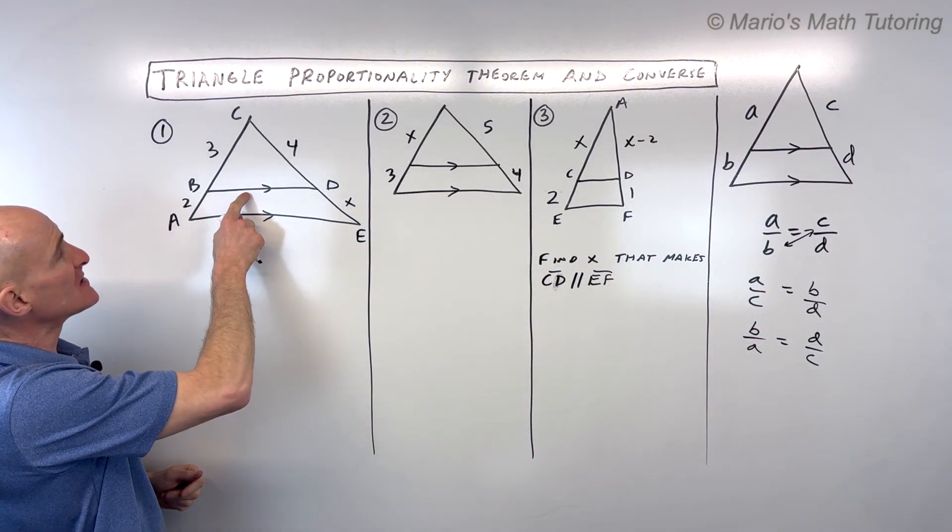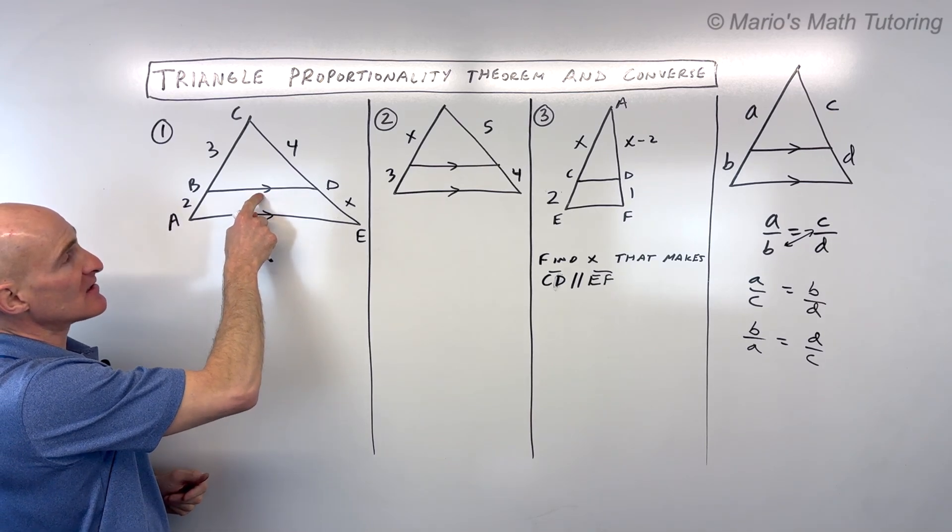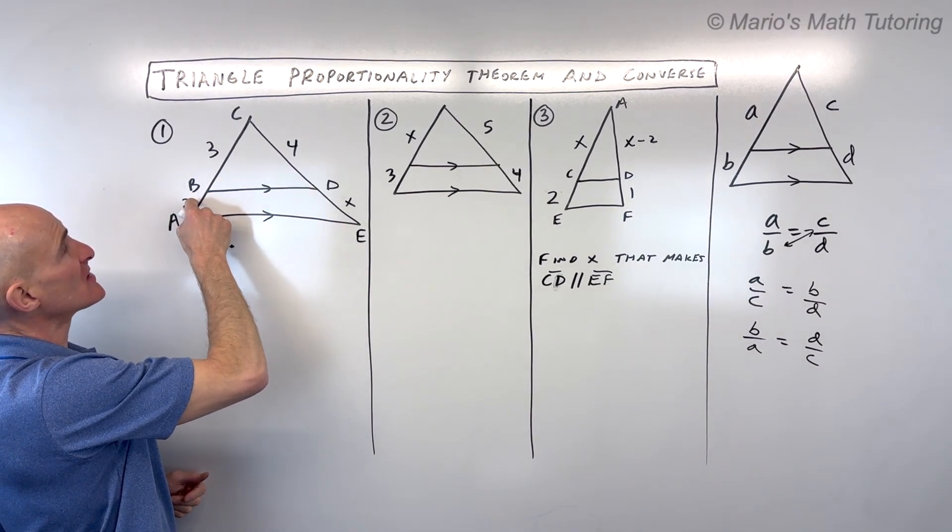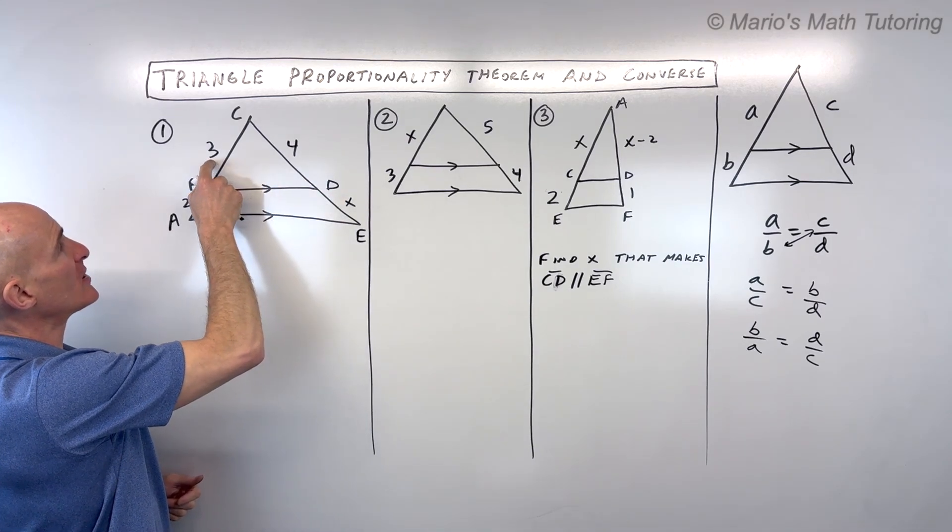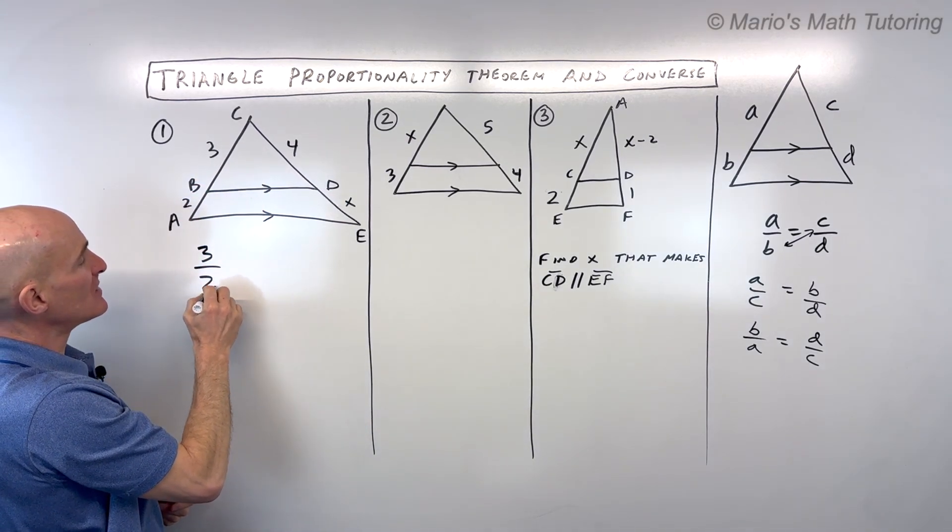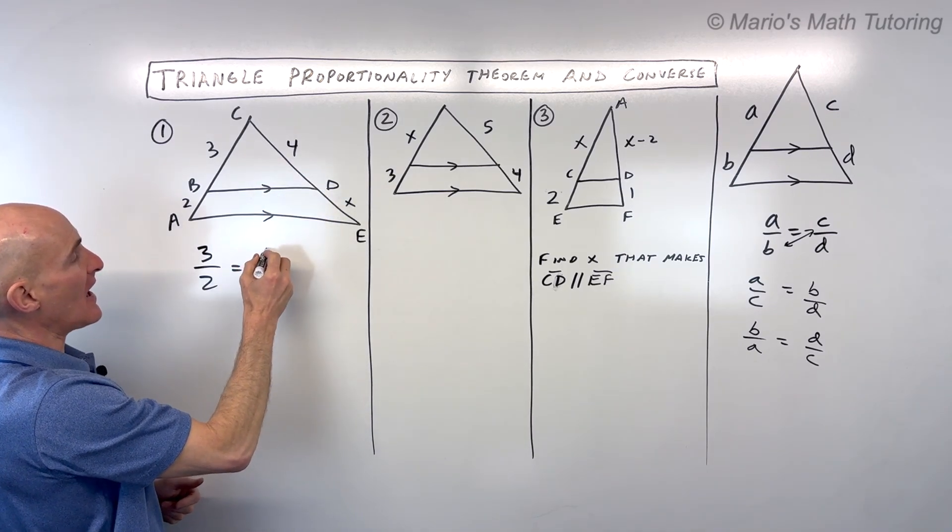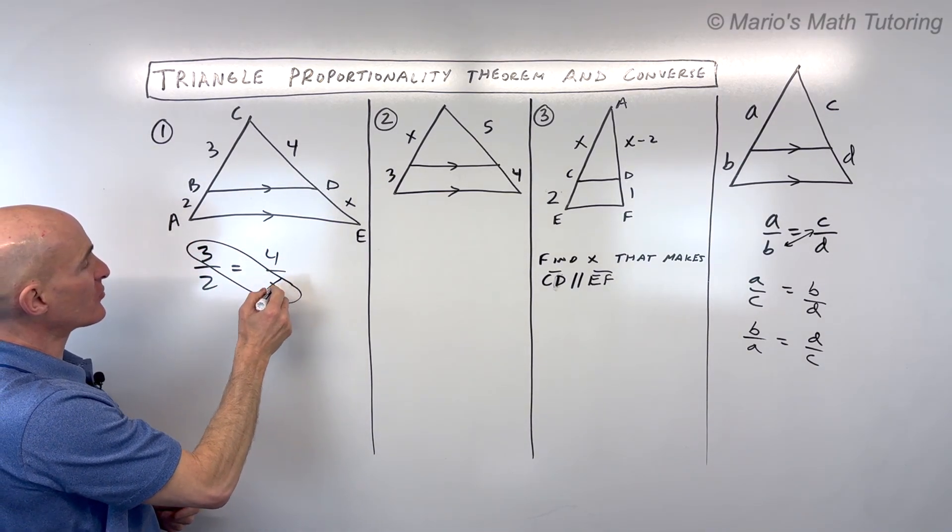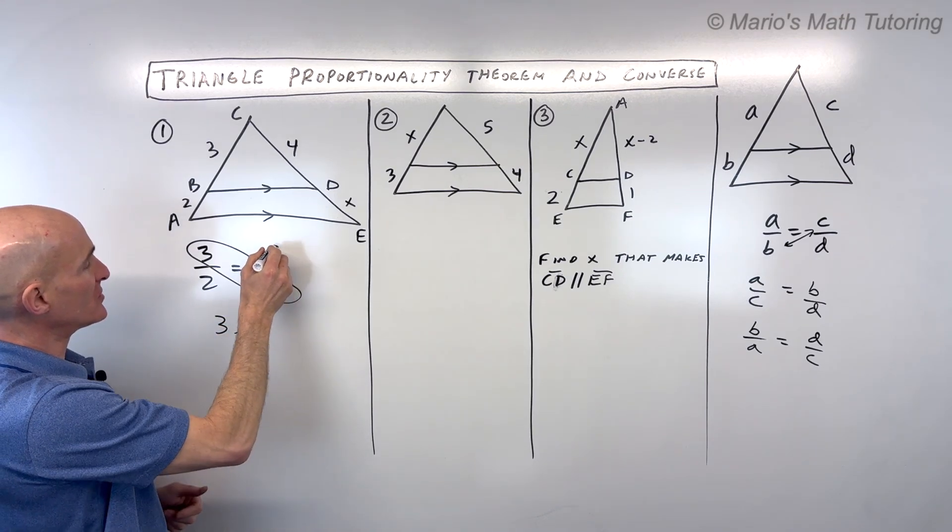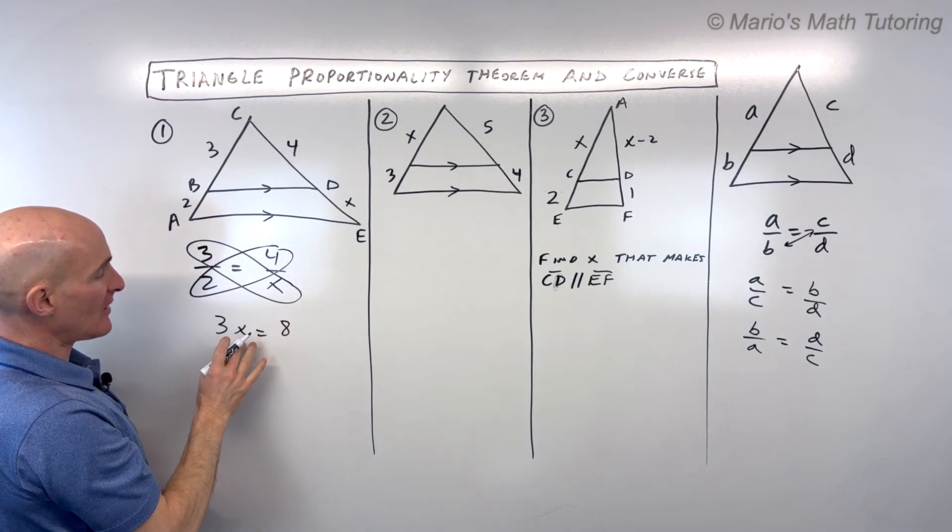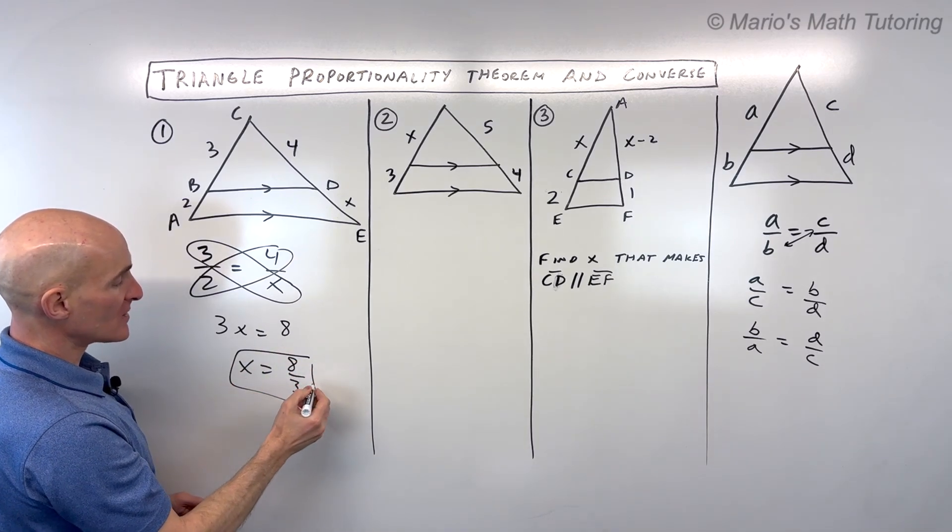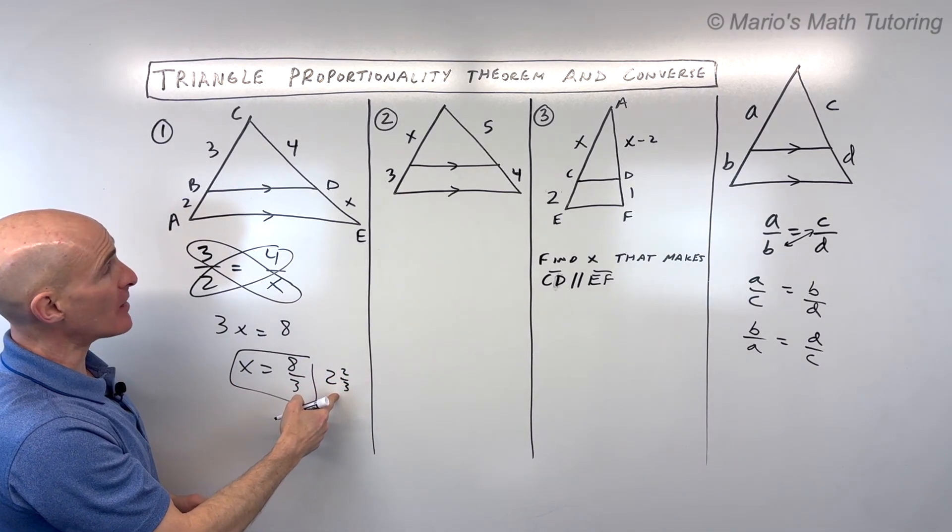So for number one, you can see that this arrow indicates that these lines are parallel. This line is splitting these two sides into two segments. And I know the ratio of 3 to 2 must be equal to the ratio of 4 to x. Now all we have to do is cross multiply, so that's 3x equals 8. If I divide both sides by 3, x equals 8 thirds, or you could say 2 and 2 thirds if you want to write it as a mixed number.